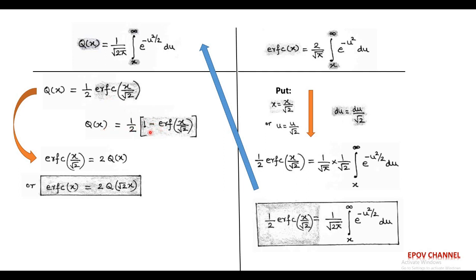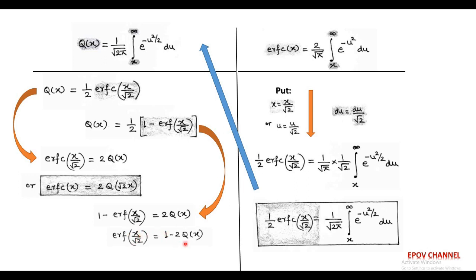Therefore, 1 − erf(x/√2) = 2Q(x), or erf(x/√2) = 1 − 2Q(x). It can also be written as erf(x) = 1 − 2Q(√2 · x).